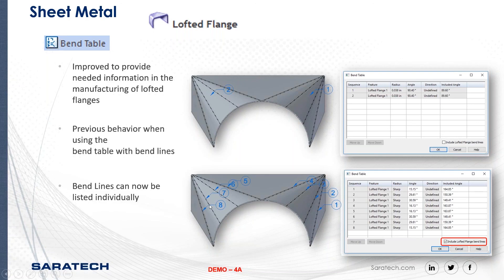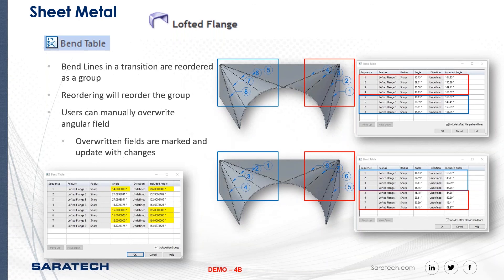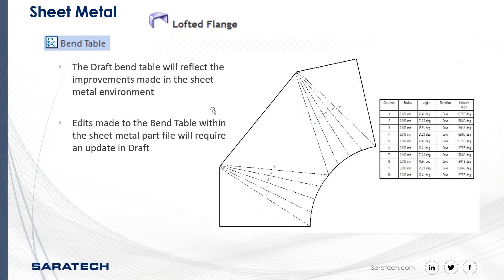The bend lines and transitions are reordered as a group — reordering will reorder the group. The user can manually overwrite the angular fields, highlighted in yellow, and those changed fields are marked and updated. The draft bend table reflects the improvements made in the sheet metal environment. When you flatten the part, it gives you the bend table showing the angles and directions.